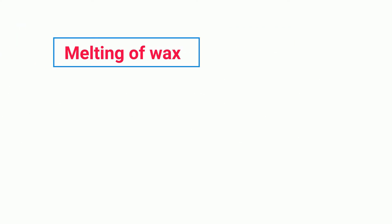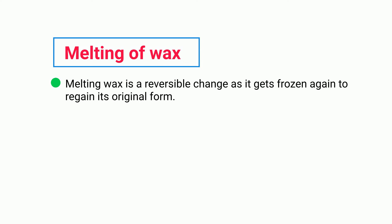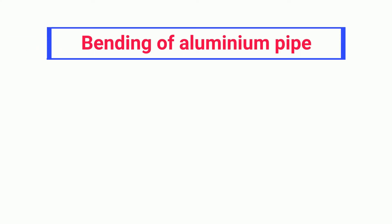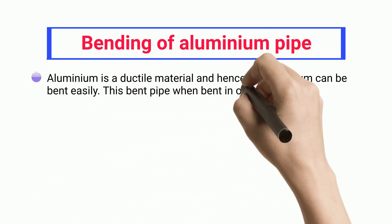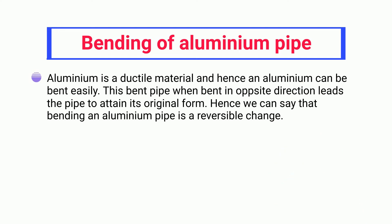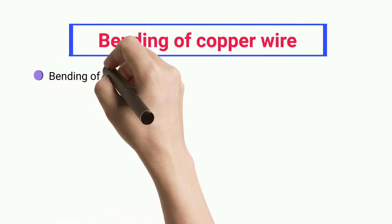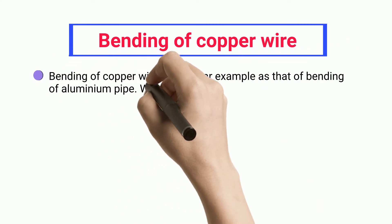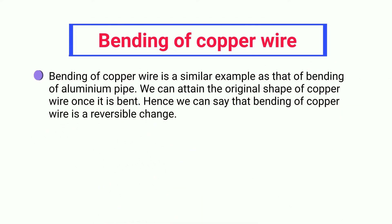Melting of Wax: melting wax is a reversible change as it gets frozen again to regain its original form. Bending of Aluminium Pipe: aluminium is a ductile material and hence an aluminium pipe can be bent easily. This bent pipe, when bent in the opposite direction, leads the pipe to attain its original form. Hence, bending an aluminium pipe is a reversible change. Bending of Copper Wire: bending of copper wire is a similar example to bending of aluminium pipe. We can attain the original shape of copper wire once it is bent. Hence, bending of copper wire is a reversible change.